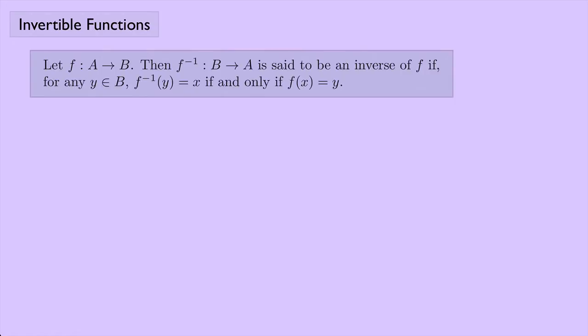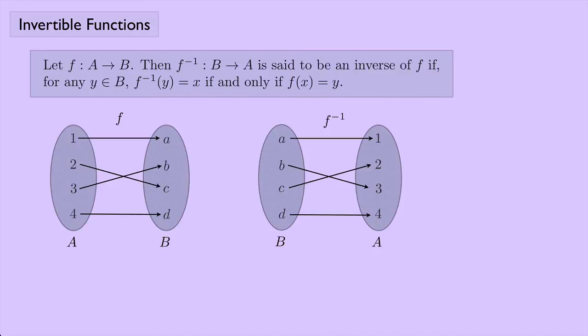Let F be a function from a set A to a set B. Then F inverse is a function from set B to set A, and F inverse is said to be an inverse of F if for any element Y in set B, F inverse of Y equals X if and only if F of X equals Y. So let's look at this example again, and now instead of calling it G, I've called it F inverse, and let's try to apply the definition to this.